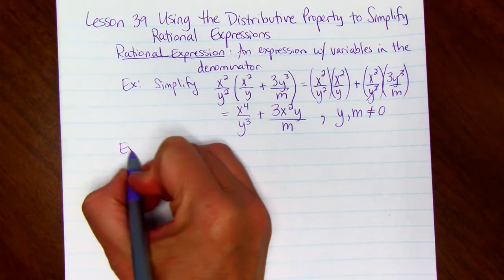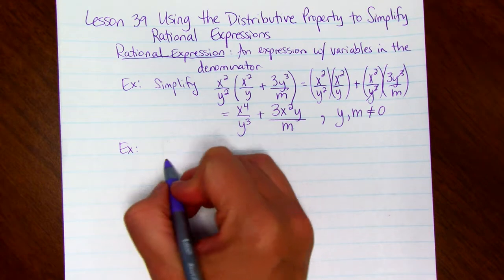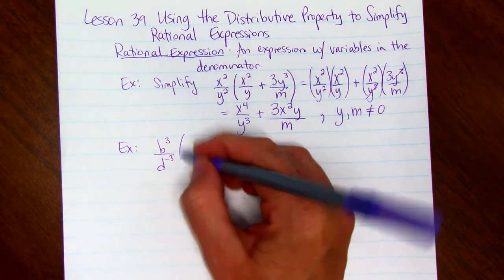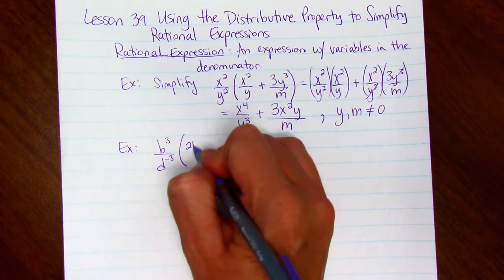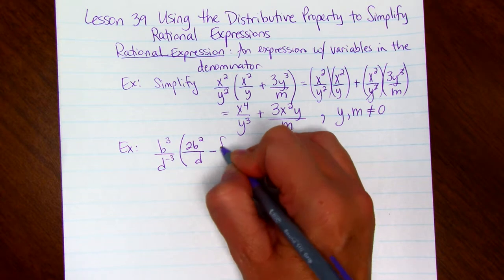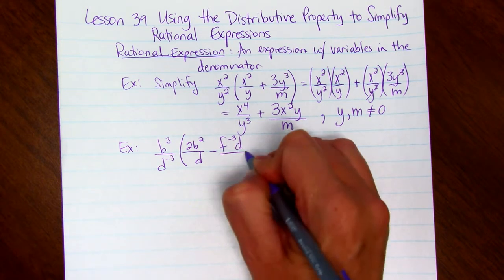Here's another example. B cubed divided by d to the negative 3. Parentheses, 2b squared divided by d, minus f to the negative 3rd d, divided by b, end parentheses.